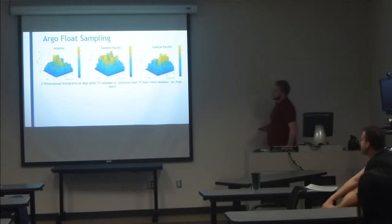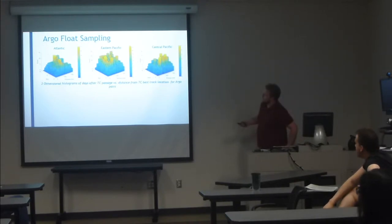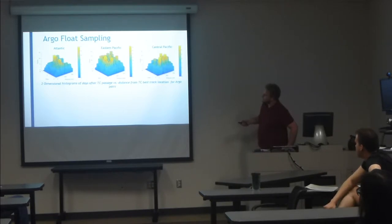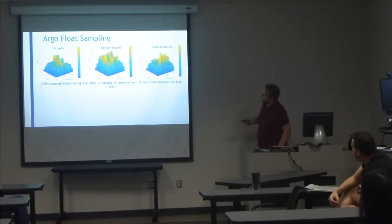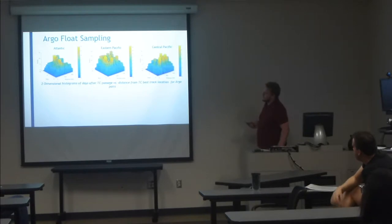Taking a look at the sampling in space and time: the x-axis is number of days after TC passage, the y-axis is distance from the best track, and the z-axis is the count. There's a peak in the temporal and spatial distribution at about 100 kilometers from the best track and within about plus or minus five days. We have the Atlantic, Eastern Pacific, and Central Pacific, and the sampling is pretty similar across basins, so I'm not too worried about sampling bias.